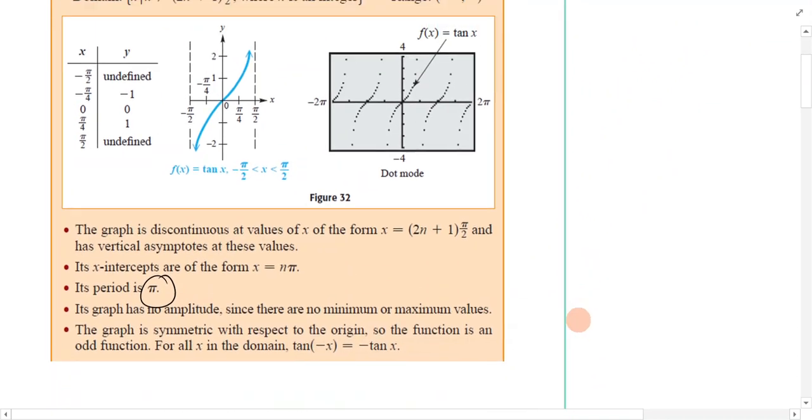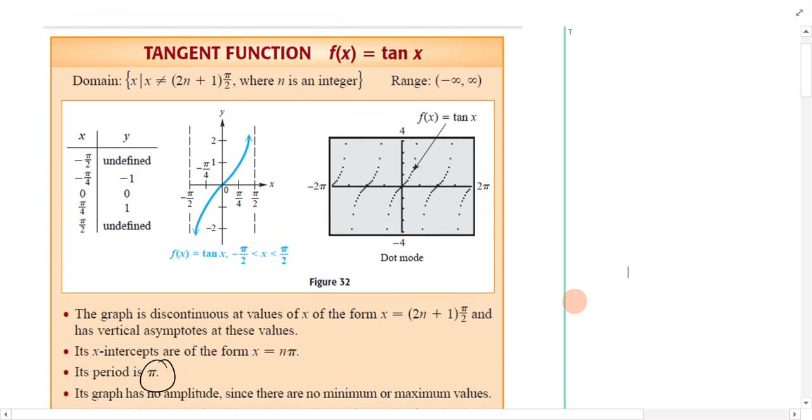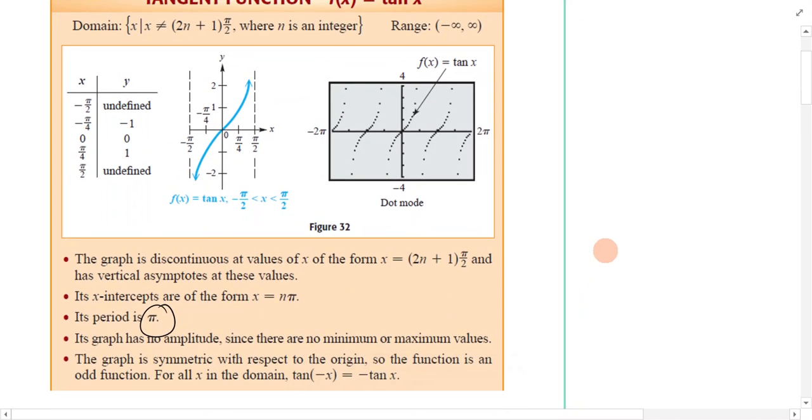The period for tangent is pi. That's different than sine and cosine, which is 2 pi. Its graph has no amplitude because it goes on forever. There's no max or min values.